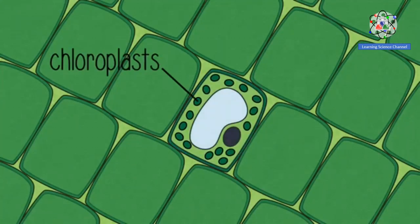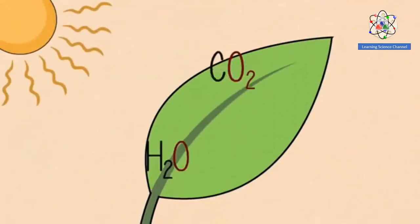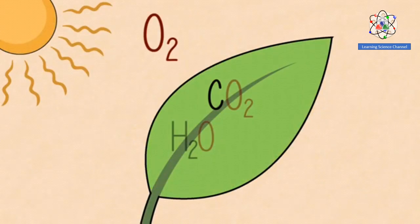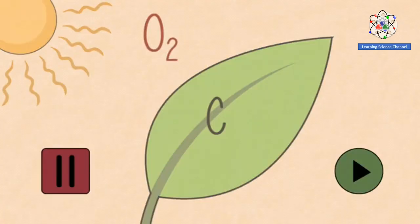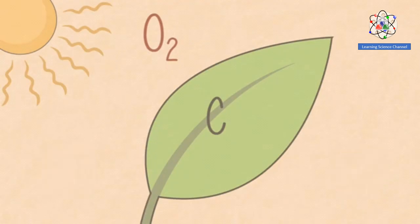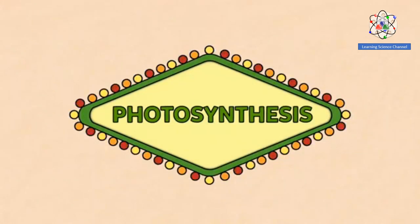This happens in the green chloroplasts found in the leaves of plants. What is the name of this reaction, perhaps the most important chemical reaction on the planet? Pause the video whilst you think of your answer. It is photosynthesis. Well done if you got it right.